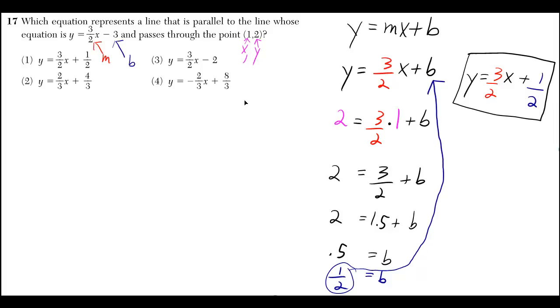The first thing you've got to know is that the 3 halves is the m, and the negative 3 is the b. So it's in the form of y equals mx plus b, and so are all these answer choices.